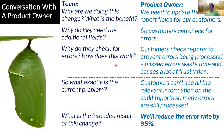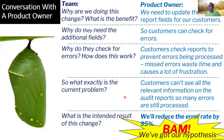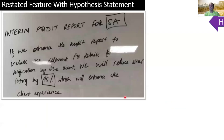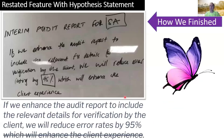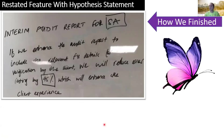We asked: what are we doing? 'We need to update order report fields for our customers.' Why? 'So they can check for errors.' How? 'They'll check the reports to prevent errors being processed — missed errors waste time and cause frustration.' What exactly is the current problem? 'Customers can't see all the relevant information, so many errors are still being processed.' What's the intended result? 'We'll reduce the error rate by 95%.' Five questions and we have our hypothesis: if we update the order report, we'll reduce customer errors by 95%.